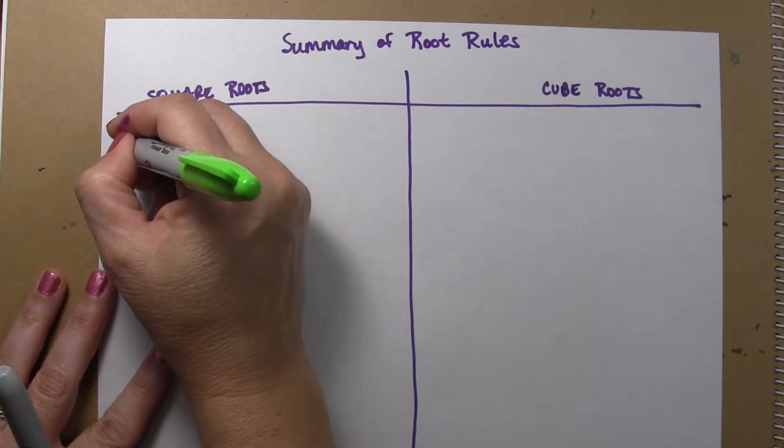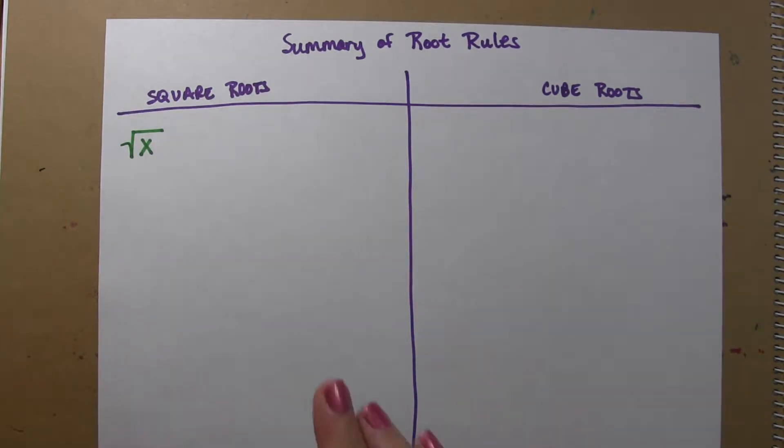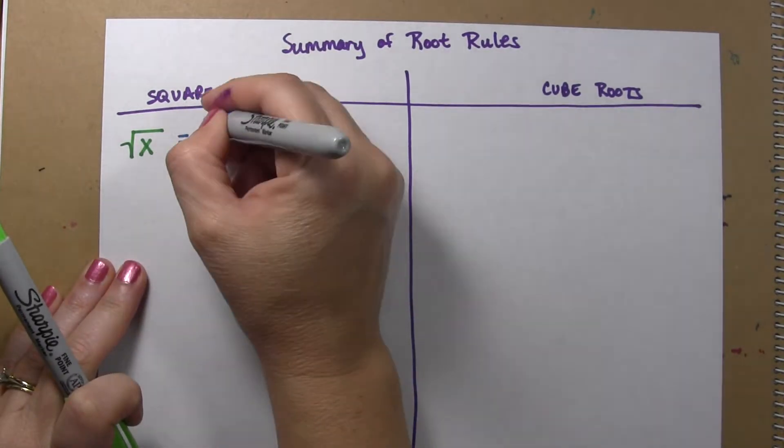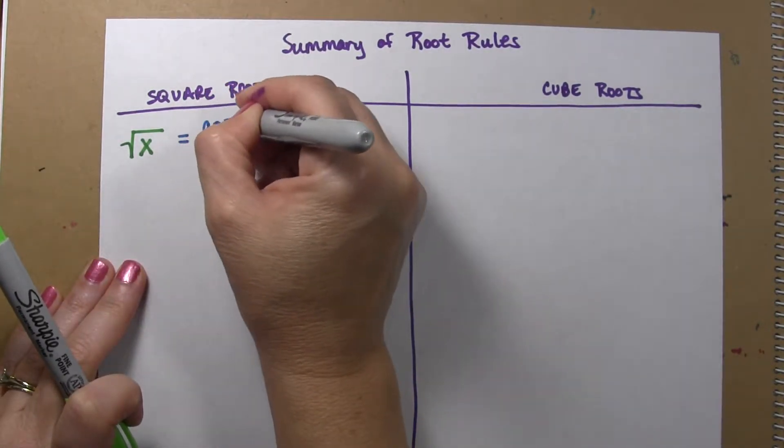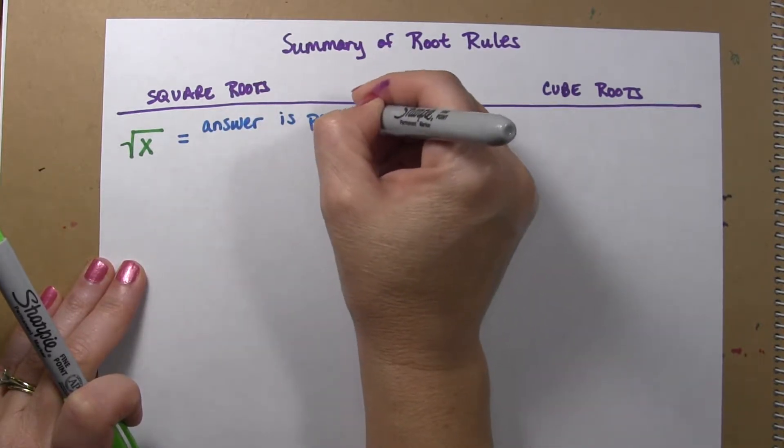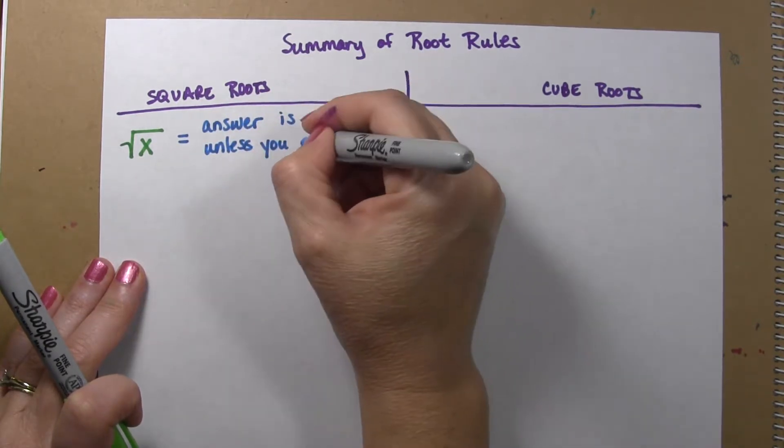Alright, so for instance, we know that if I have this square root of some number x, I know that the answer is going to be positive. Unless you see a plus minus sign.